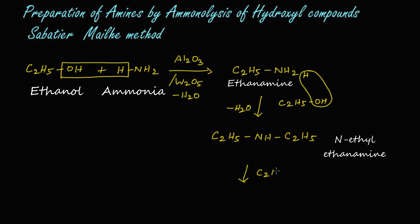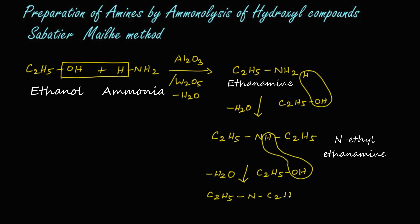Now we react with ethyl alcohol again (C₂H₅OH). The hydrogen from the secondary amine and the OH from ethyl alcohol leave as a water molecule (H₂O), and we get a tertiary amine: C₂H₅-N(C₂H₅)-C₂H₅, which is known as N,N-diethylethanamine.